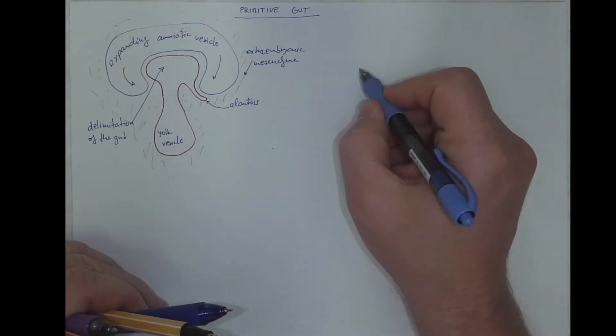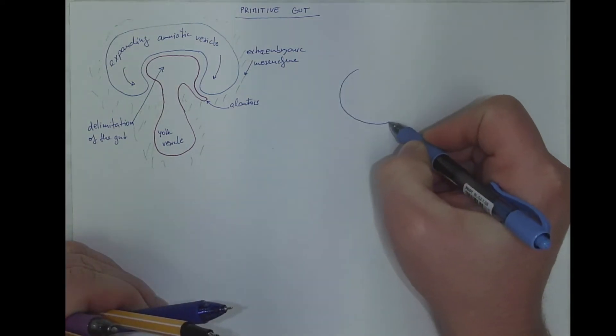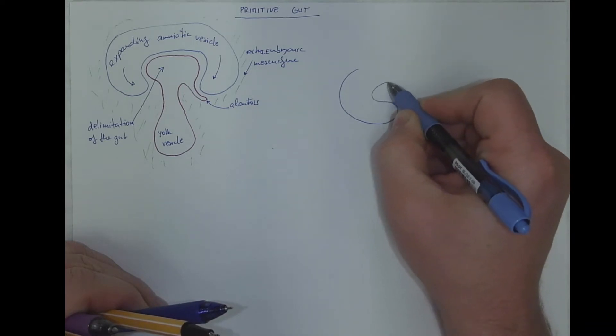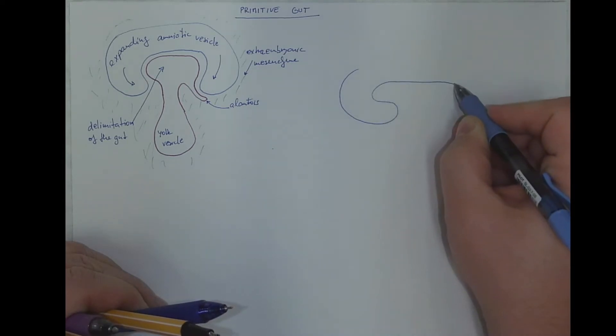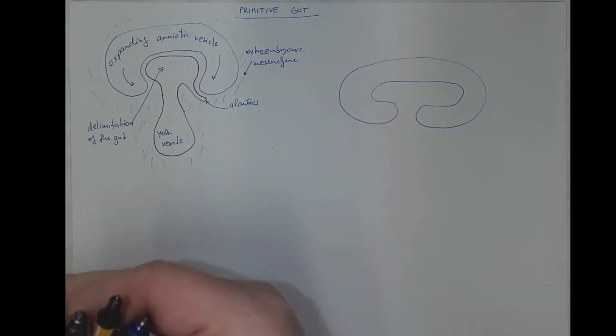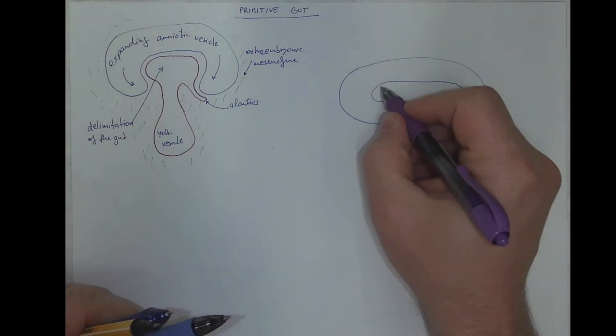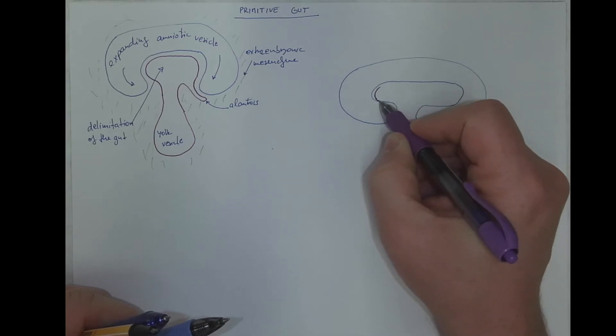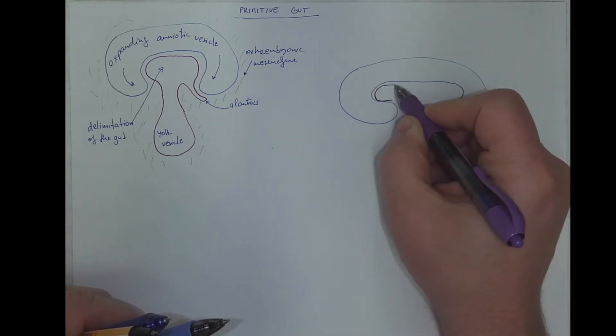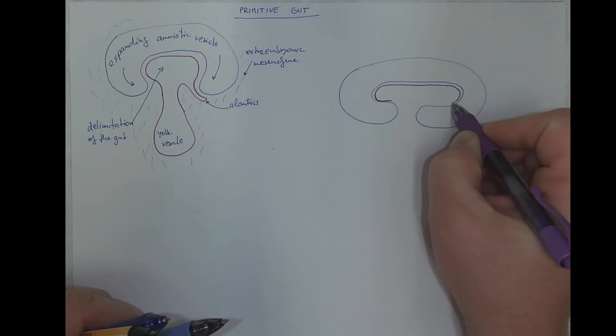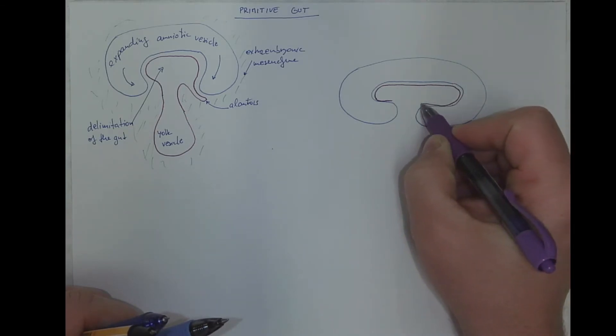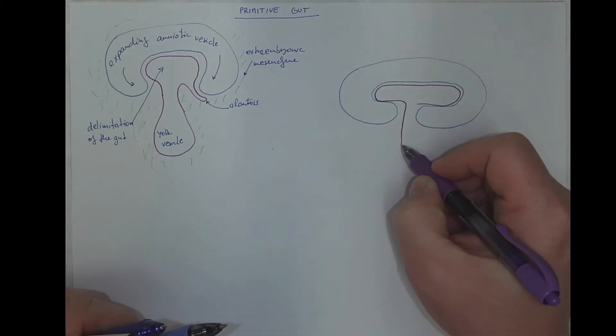Later on, we got the amniotic vesicle and this part of the former yolk vesicle becomes the primitive gut. It has a close contact with the amniotic vesicle at two spots. It is connected with the remnants of the yolk vesicle via a kind of duct.